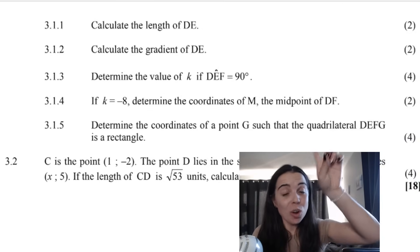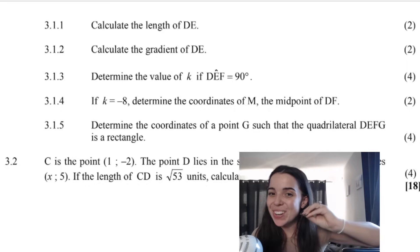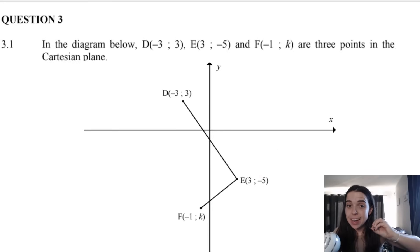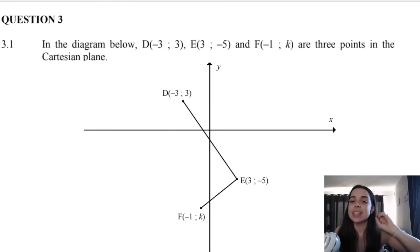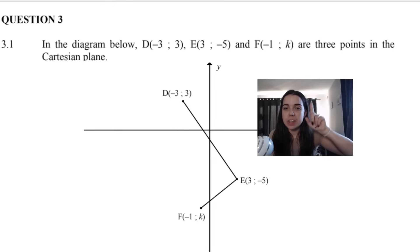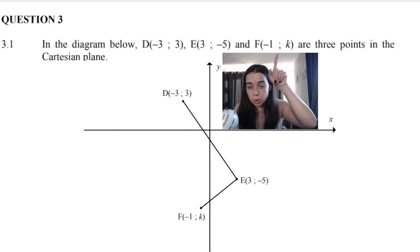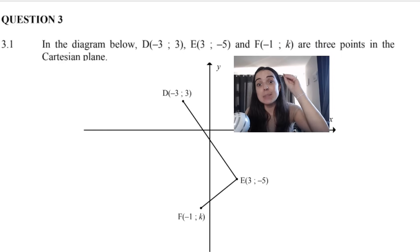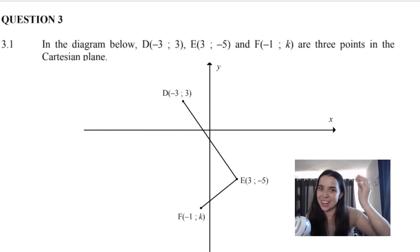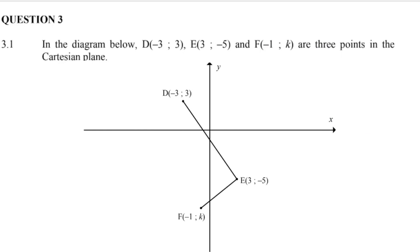We'll be answering all of this so please don't go anywhere. They give me a diagram and they give me D, E and F, and they say that there are three points in the Cartesian plane. Just take note that F — if this is a coordinate — the X part of the coordinate is negative 1, but the Y part of the coordinate is missing. We're obviously going to have to find that at some point.